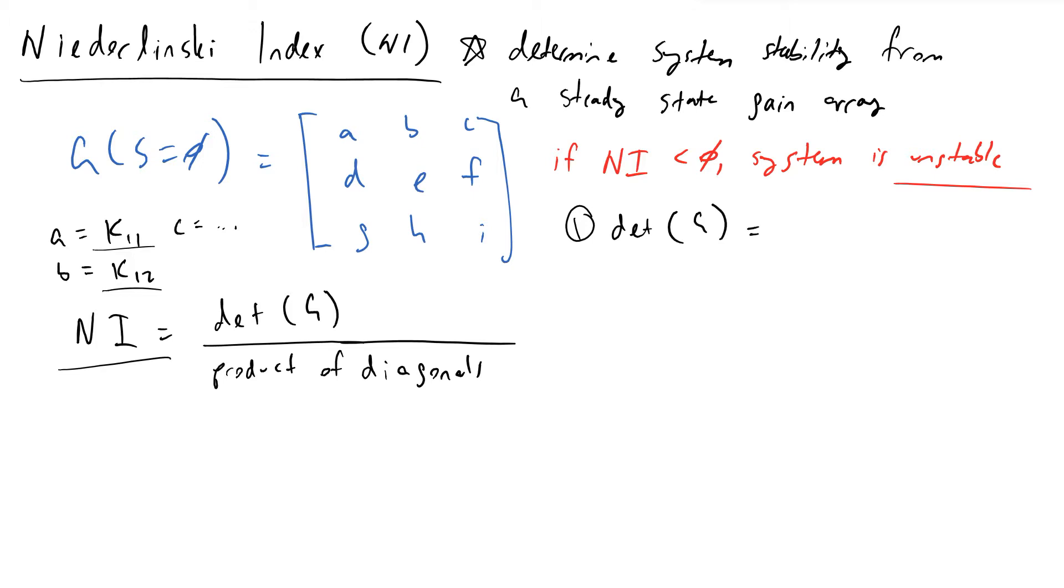And this, in this example that I have here, will simply be equivalent to A times EI minus FH minus B times DI minus FG, and then plus C times DH minus EG.